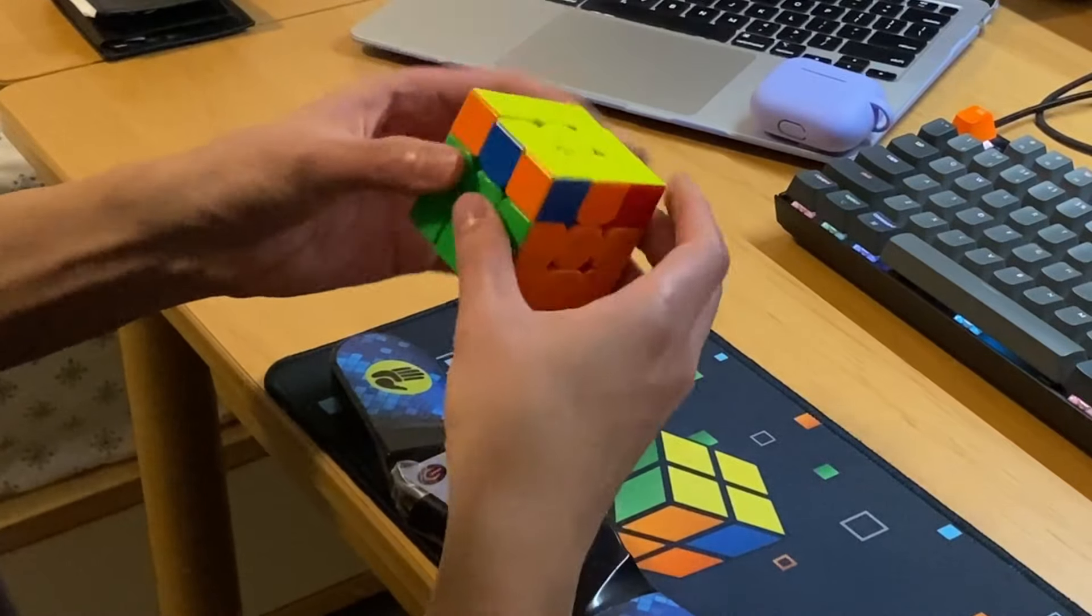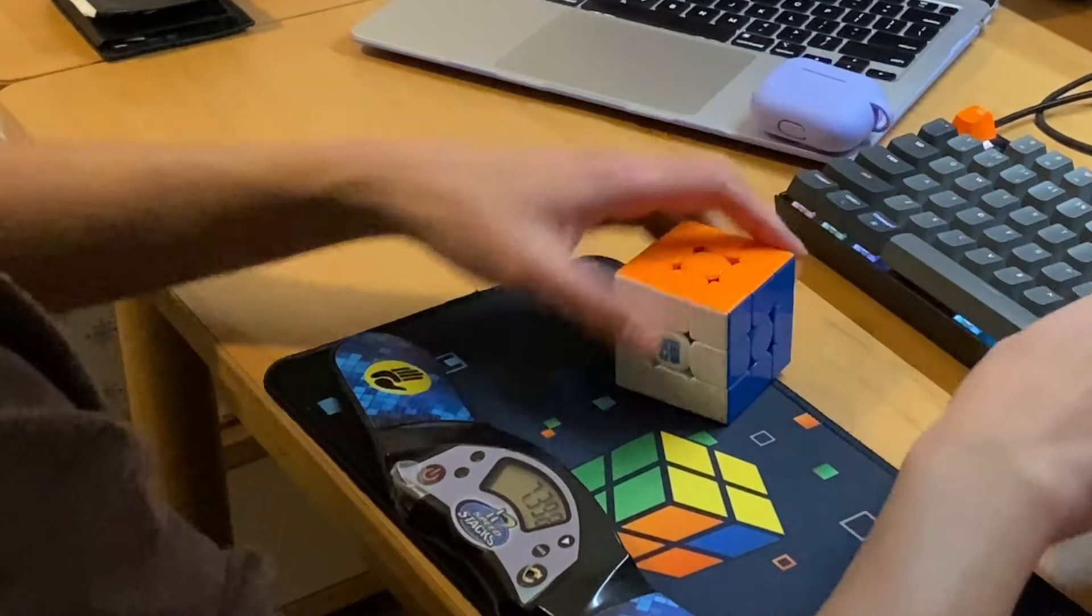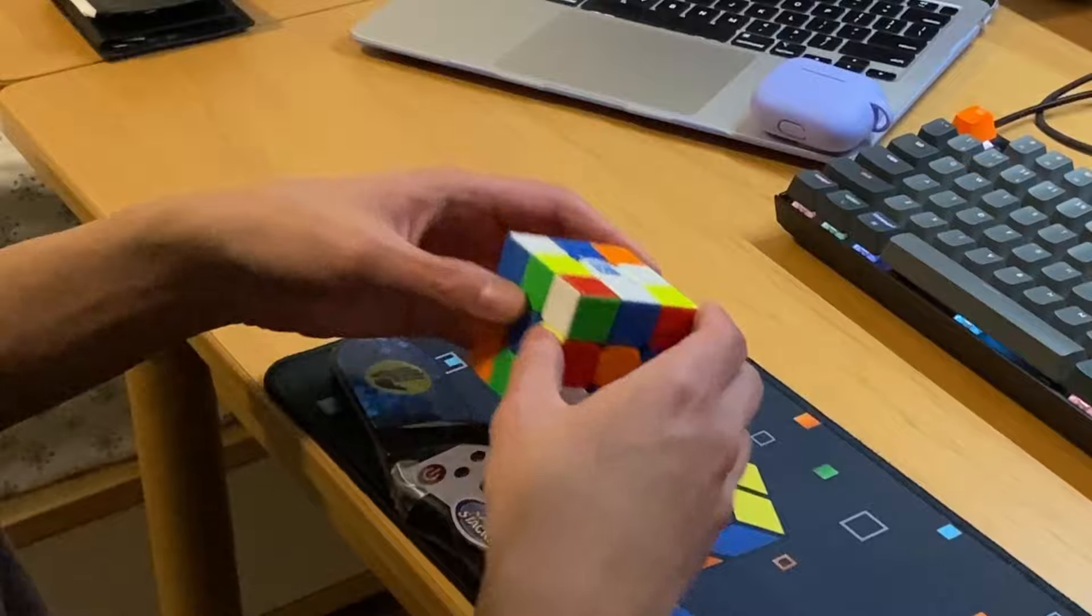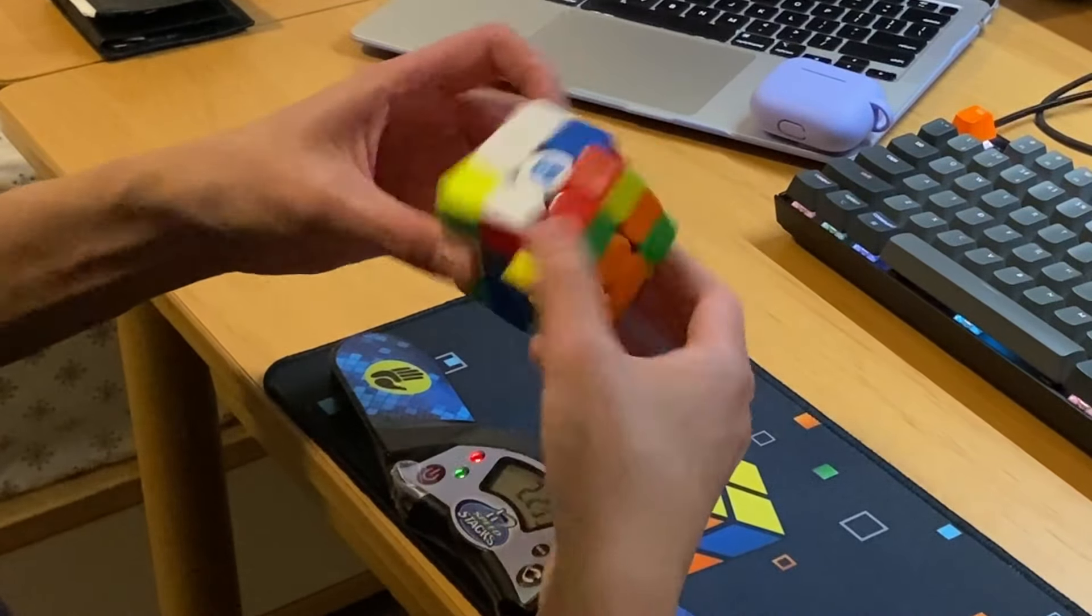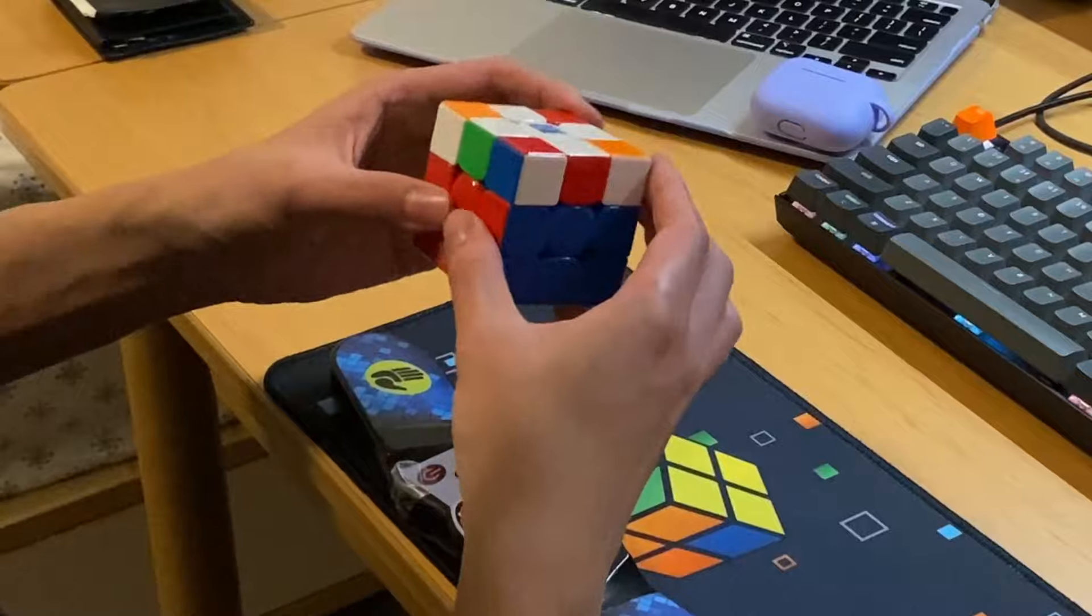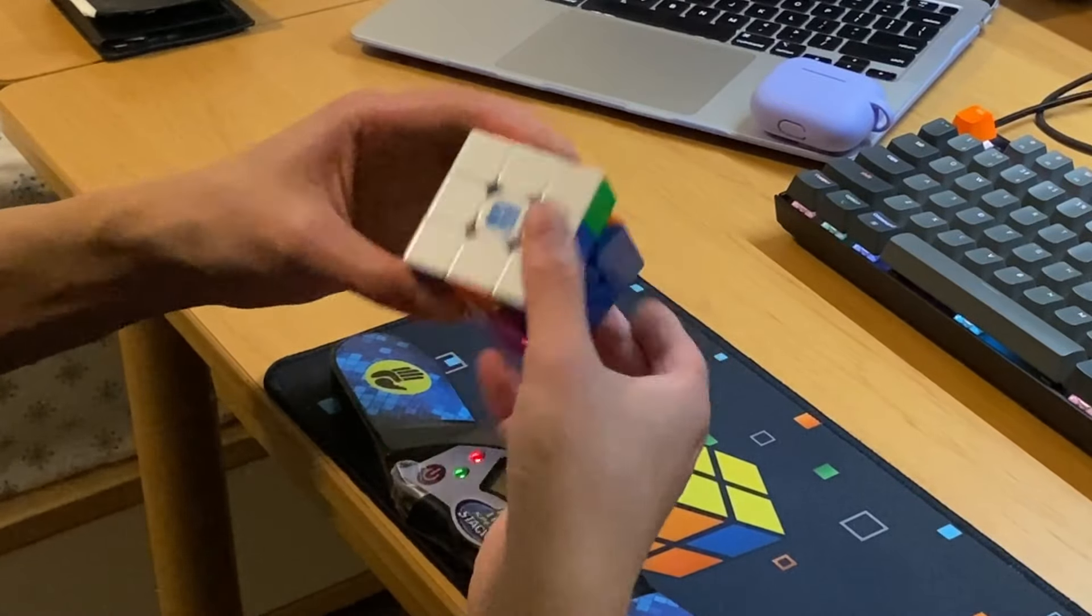Personally, I think the Super Weilong is only a good cube if it's set up to be faster, and a slower setup on the Super Weilong doesn't really feel that good or work that well. But on the RS3M V5, I think that a slower setup actually works pretty well, and the cube works nicely.